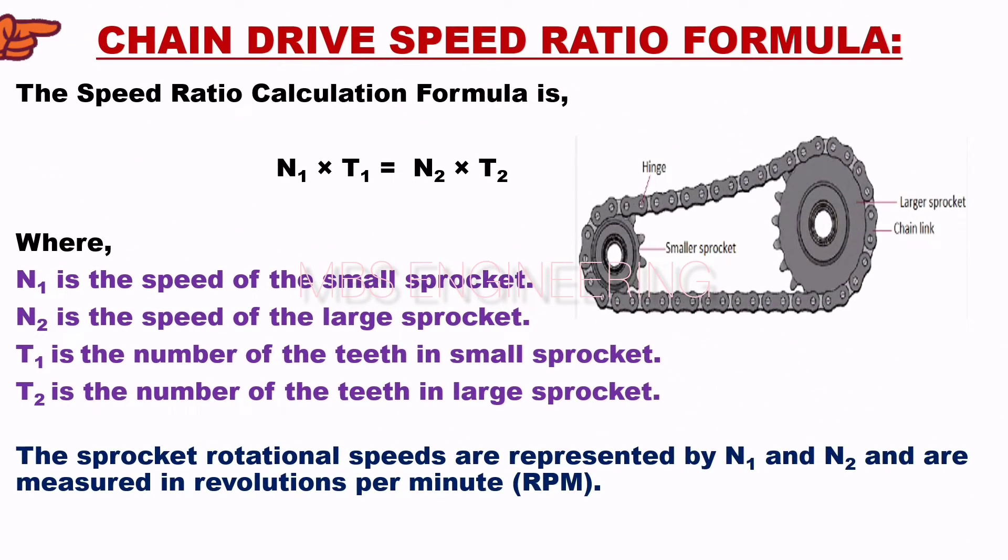Let's learn about the chain drive speed ratio formula. It is represented as T1 multiplied by N1 is equal to T2 multiplied by N2. Where N1 is the speed of the small sprocket, N2 is the speed of the large sprocket, T1 is the number of teeth in small sprocket, T2 is the number of teeth in large sprocket. The sprocket rotational speeds are represented by N1 and N2 and are measured in revolutions per minute RPM.